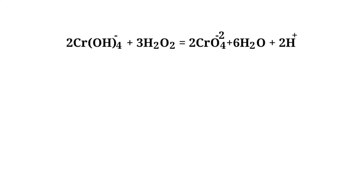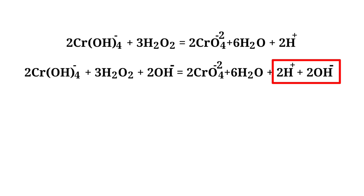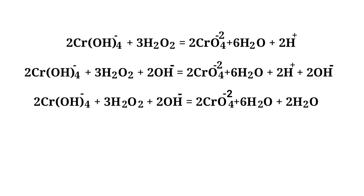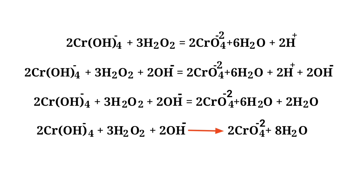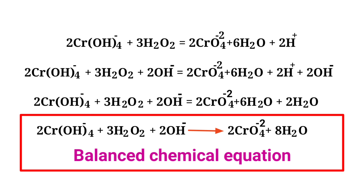For a reaction in a basic medium, add one OH⁻ ion for every H⁺ ion present in the equation. The OH⁻ ion must be added to both sides to keep charges and atoms balanced. Combine the OH⁻ ion and H⁺ ion that are on the same side to form water. The equation is now balanced in a basic medium.